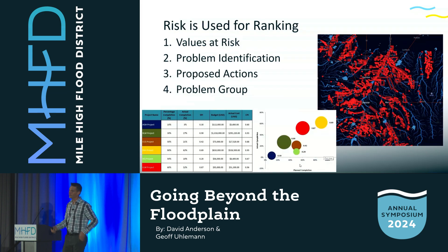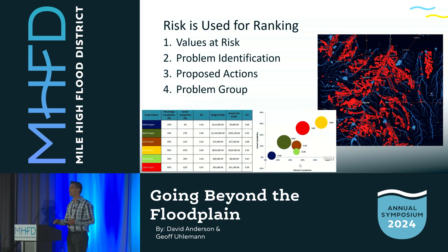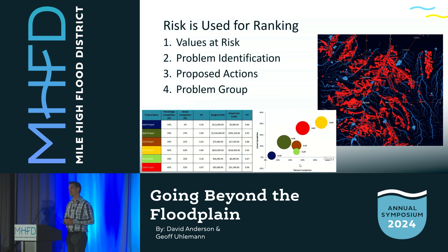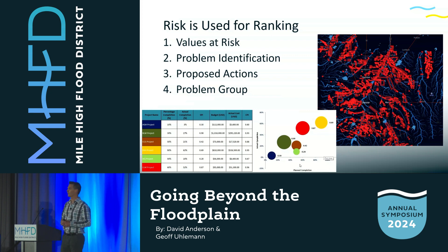The whole goal here is not just to make cool analytics and dive into the data, but to help inform decisions. Tying back to the Confluence framework discussed earlier, these are four layers we'd want to build in: first, values at risk — the people, property, and infrastructure that are receptors to that risk; second, problem identification — identifying those needle movers and hotspots through this gridded analysis, or the digitized actions from the master plans; third, the proposed actions — potential projects or solutions that would mitigate that risk; and fourth, a problem group — a way of aggregating this information and looking at project-specific polygons to do that risk ranking. Then you can actually prioritize your projects.